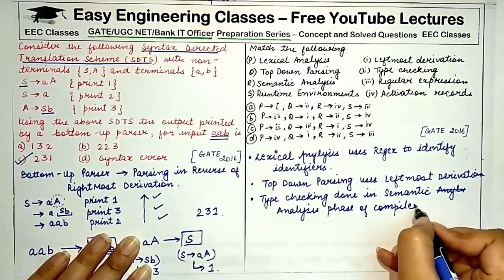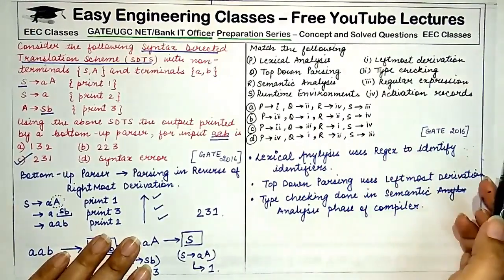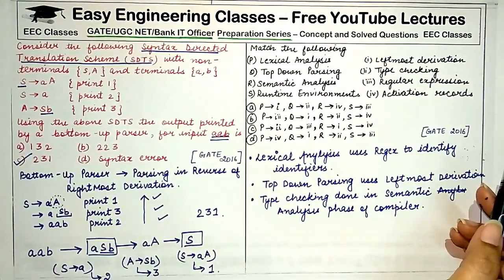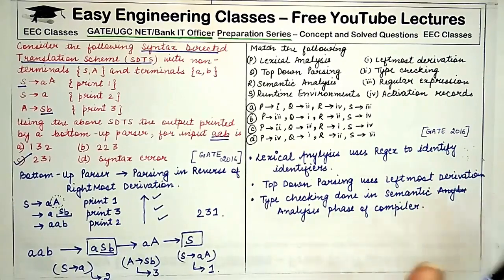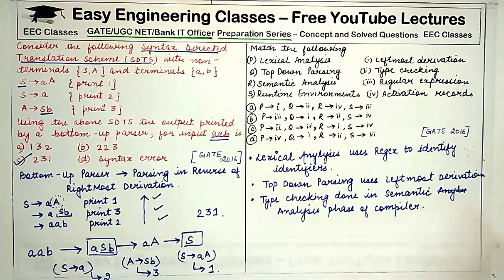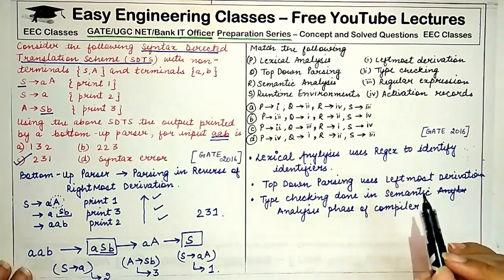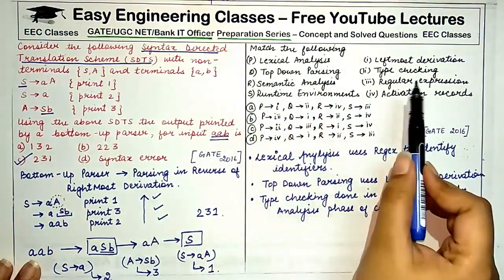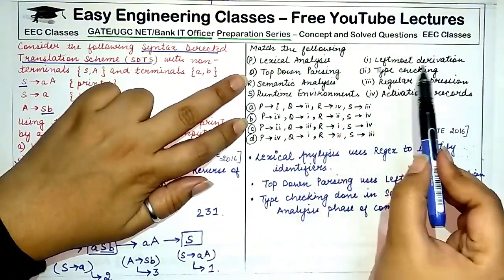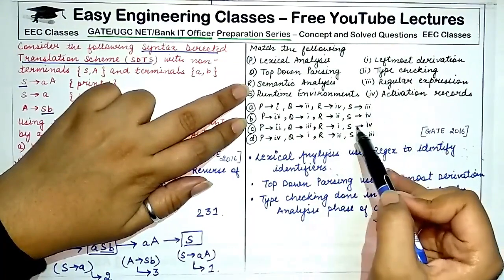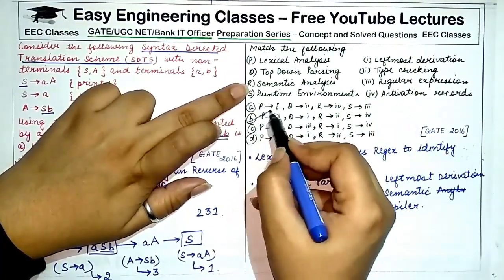Runtime environment matches to activation records, because an activation record is created for every function and loaded onto the stack at runtime. Every time a function runs, all its parameters and details are loaded into a stack used during execution. So the correct answer is B: P→3 (regular expression), Q→1 (leftmost derivation), R→2 (type checking), S→4 (activation records).